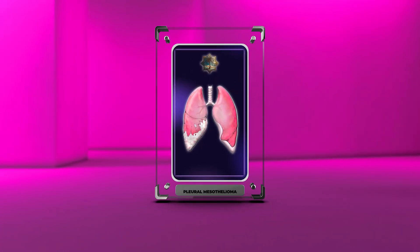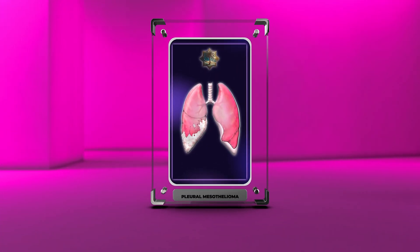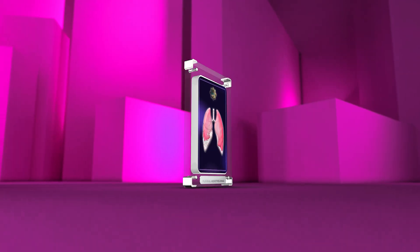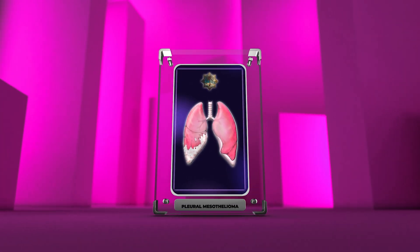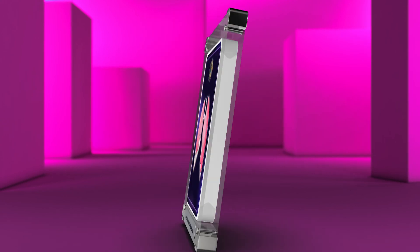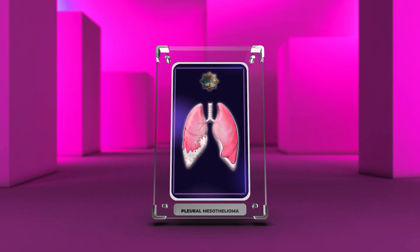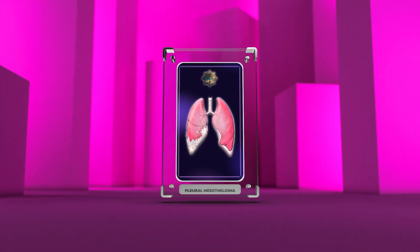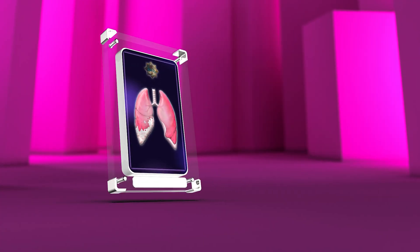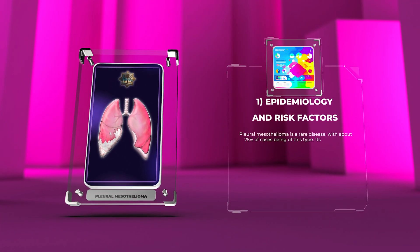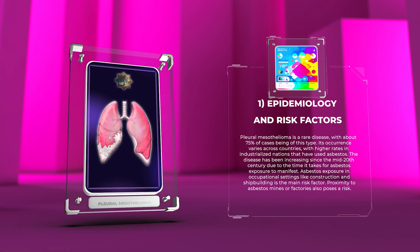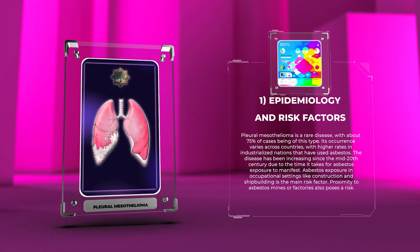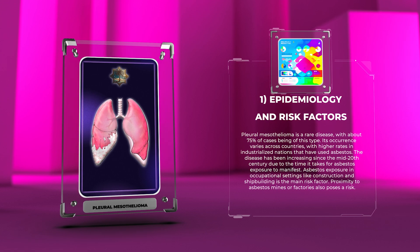Pleural mesothelioma is a rare and aggressive cancer affecting the lining of the chest and lungs. It is mainly caused by exposure to asbestos. In this video, we will discuss different aspects of pleural mesothelioma including its causes, types, diagnosis, treatment options, and supportive care. Pleural mesothelioma is a rare disease, with about 75% of cases being of this type, and its occurrence varies across countries with higher rates in industrialized nations that have used asbestos.